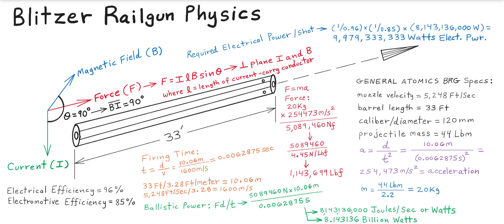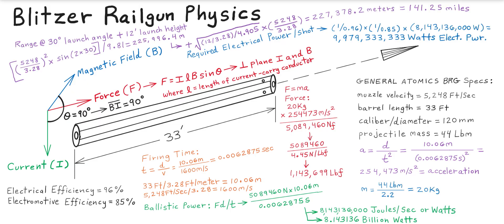The electrical power involved equates to 9.979 billion watts of electrical power per shot. At a 30-degree launch angle with a barrel height above the plane of approximately 12 feet, the range would equate to 141.25 miles. Thank you for watching this presentation and have a great day.